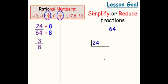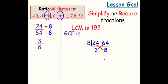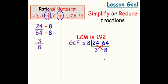Likewise, with the factor bracket, we factored out an 8. 24 divided by 8 is 3, and 64 divided by 8 is 8. So again, we have our LCM, which is 192, and our GCF, which is 8. And 3 and 8, we stated, are relatively prime.